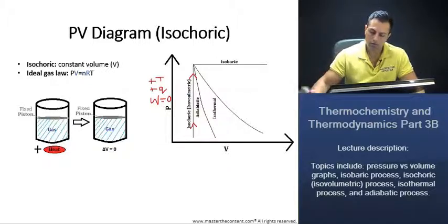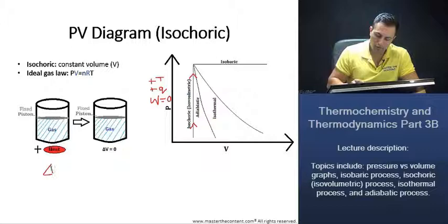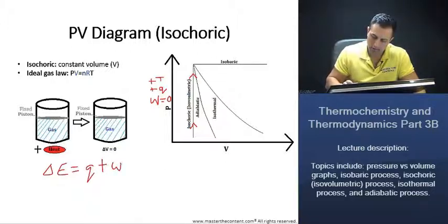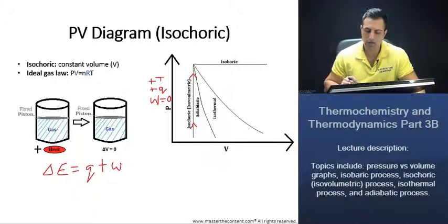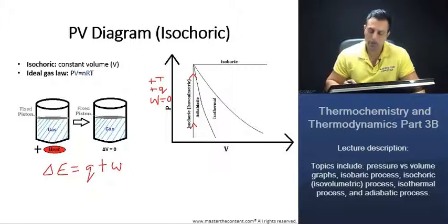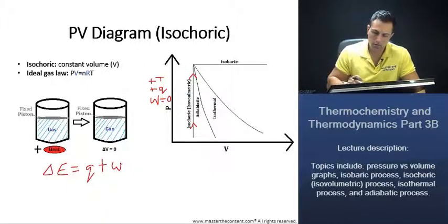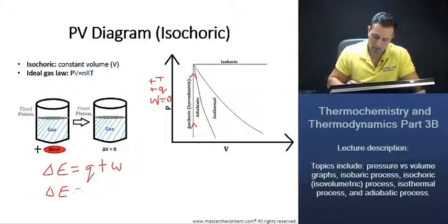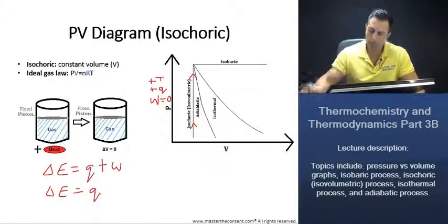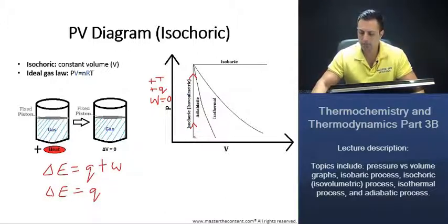Now, if you remember our internal energy equation, it was anytime a system wants to exchange energy with its surroundings, it's always heat plus work. Since work is zero, the change in energy, in internal energy, is just the heat. So as we move up the isotherm here, we notice that the internal energy is also increasing as we go up.